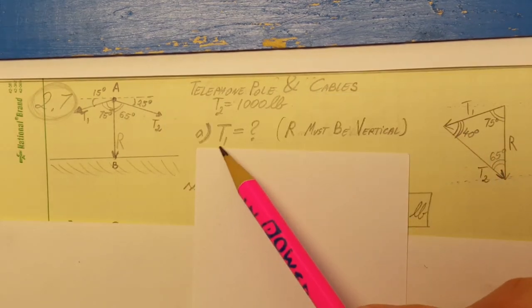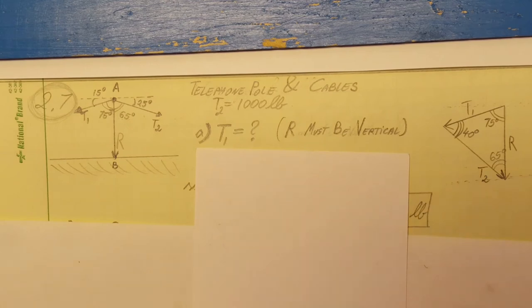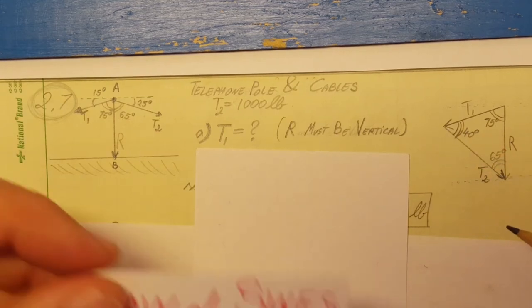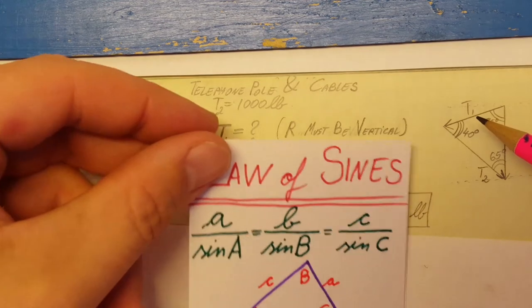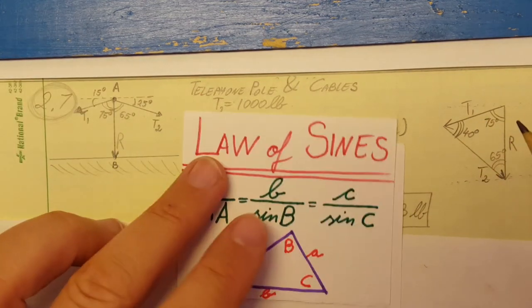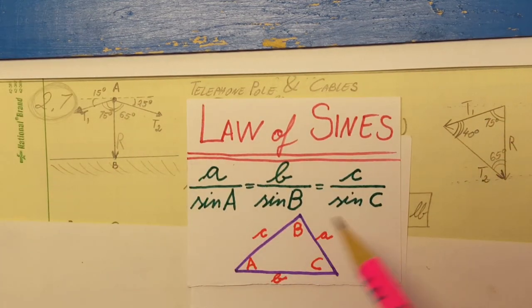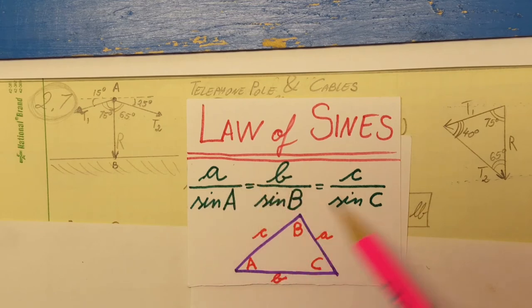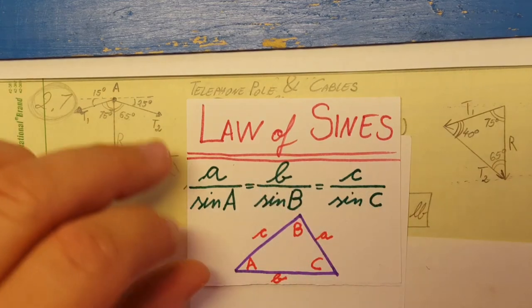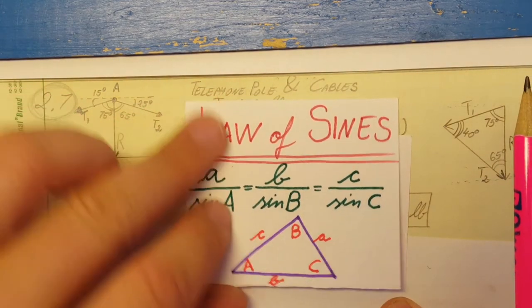Now they want us to find the tension in T1. We have all three angles and we have this side of the triangle. To find another side, we're going to use the law of sines, and we're going to use only two sides of it—we don't really need the third one.